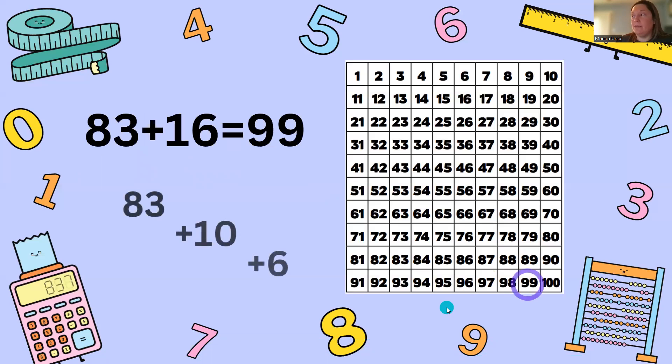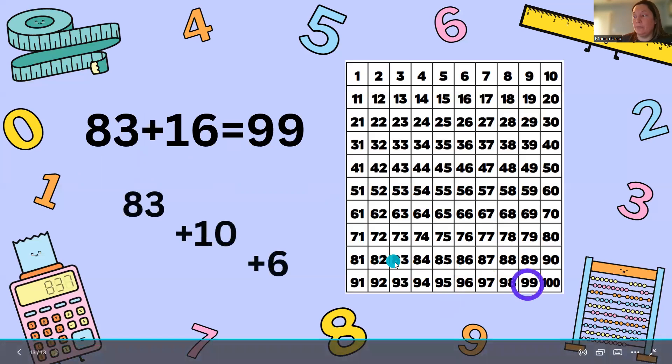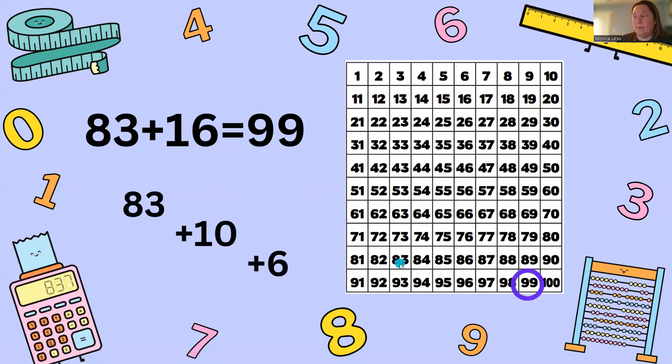Now to solve for this one we start at 83. We're going to add 10 by moving down one row and then we're going to add six ones. So one, two, three, four, five, six we get our answer of 99.